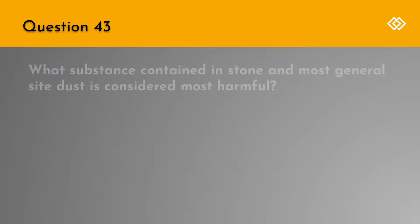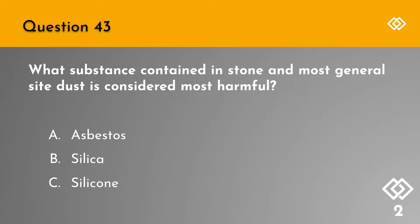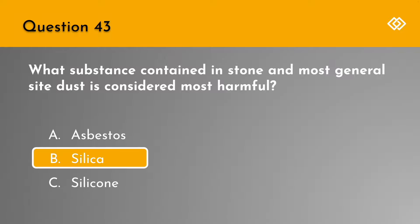Question 43. What substance contained in stone and most general site dust is considered most harmful? A. Asbestos. B. Silica. Or C. Silicon. The correct answer is B. Silica.